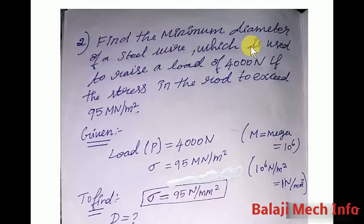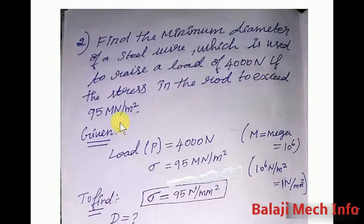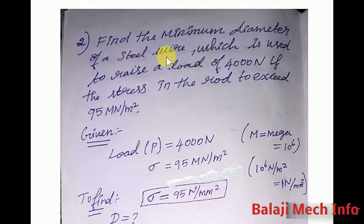Find the minimum diameter of the steel wire which is used to raise a load of 4,000 N, if the stress in the rod is not to exceed 95 MN per m².